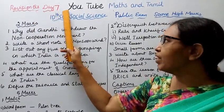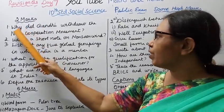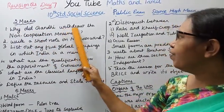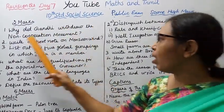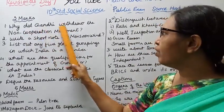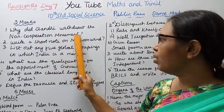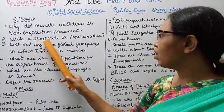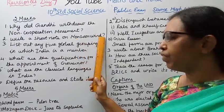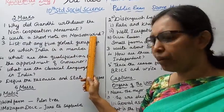Day 7 revision questions — two marks. First: Why did Gandhi withdraw the Non-Cooperation Movement? Second: Write a short note on monsoon wind.